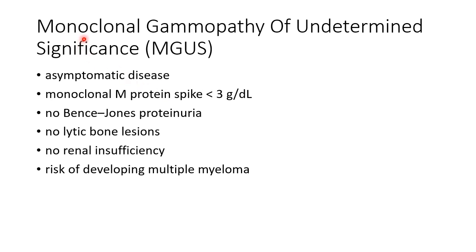Now let us see about monoclonal gammopathy of undetermined significance, abbreviated as MGUS. It is basically an asymptomatic disease. There is a monoclonal M-protein spike but it is less than 3 grams per deciliter. In contrast to multiple myeloma, there is no Bence-Jones proteinuria, no lytic bone lesions, and no renal insufficiency in MGUS. However, these patients are at risk of developing multiple myeloma.